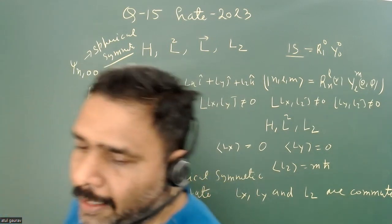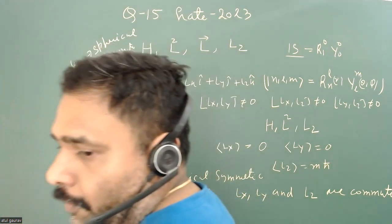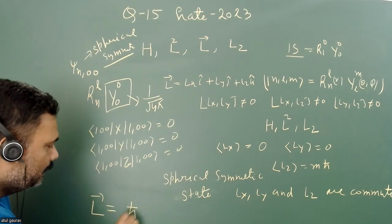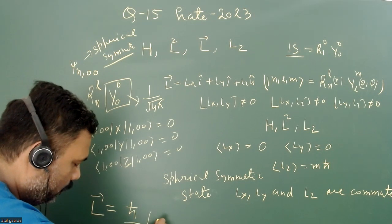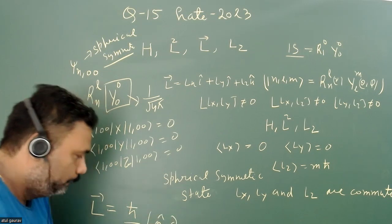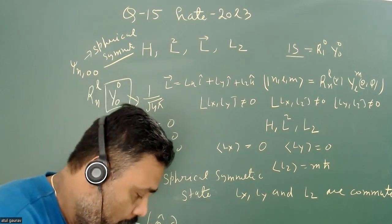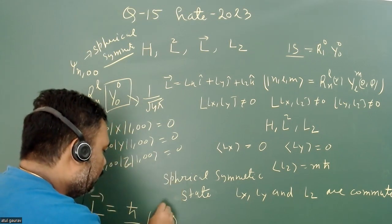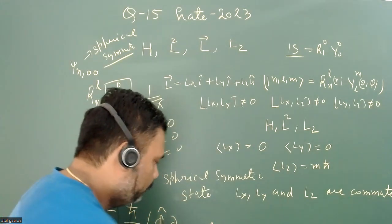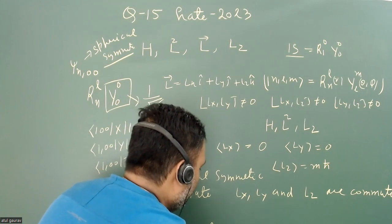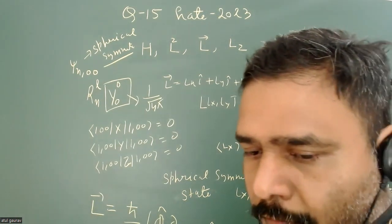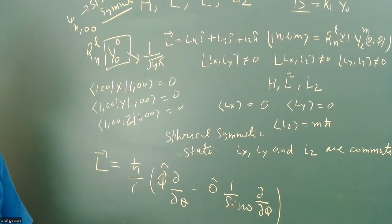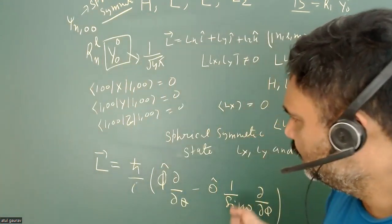Now let's write the L operator. The L operator in vector form is given by (ħ/i)[φ̂(∂/∂θ) − θ̂(1/sinθ)(∂/∂φ)]. I'm using the expression given in Griffiths — you can check page 180 of the second edition. From this expression you can easily see that the L operator has dependency only on θ and φ.